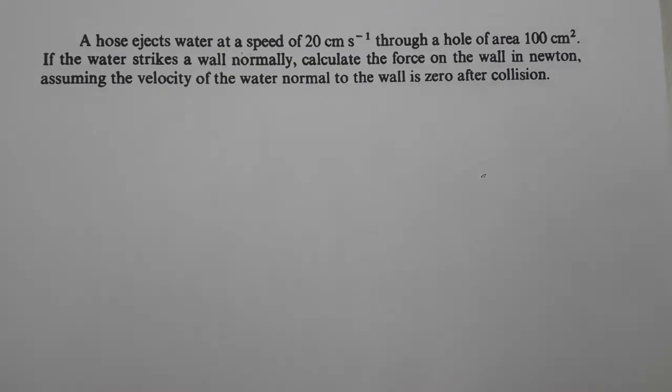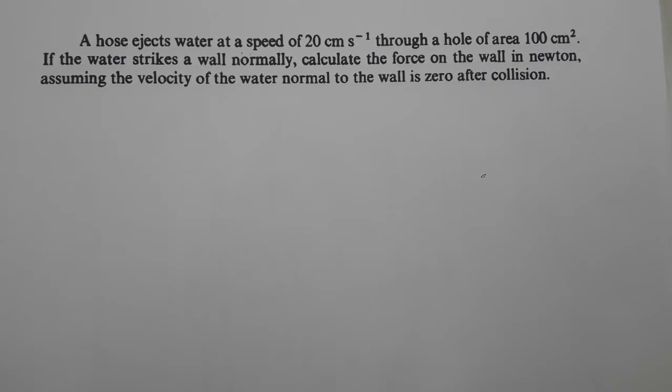Hi guys, in this video we are going to discuss a question from forces. I have given links to previous physics videos in the description so you can watch those too. If you are new to this channel, don't forget to subscribe. Let's read the question: a hose ejects water at a speed of 20 centimeters per second through a hole of area 100 centimeters squared. If the water strikes a wall normally, calculate the force on the wall in newtons, assuming the velocity of the water normal to the wall is zero after collision.